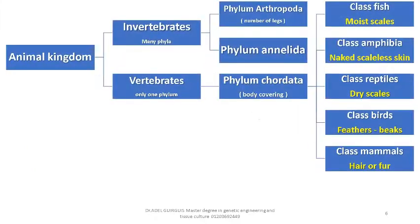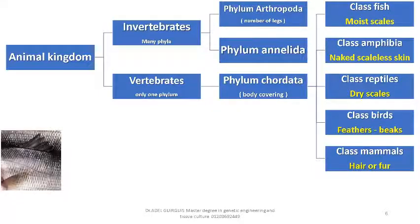Animal Kingdom is divided into two main divisions. Number one: Invertebrates, which includes animals without a backbone. Number two: Vertebrates, which includes animals with a backbone.